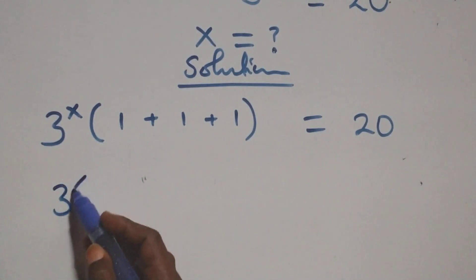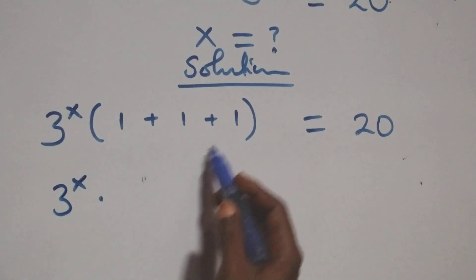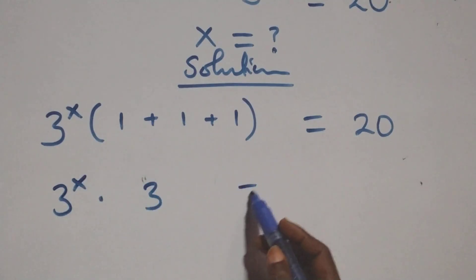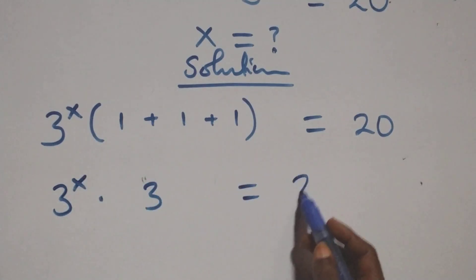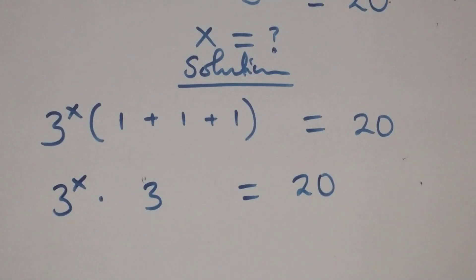This becomes 3 raised to power x times one plus one plus one, that is 3, then equals to 20.